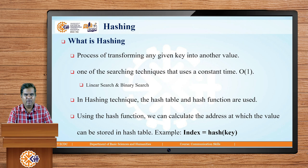Hashing has various definitions. First, it is a process of transforming any given key into another value. We have some key that we have to transform into some other value so that the value can be stored somewhere, and that storage is called the hash table. The process of transforming a key into another value is also called hashing.